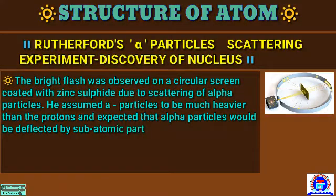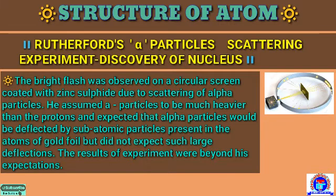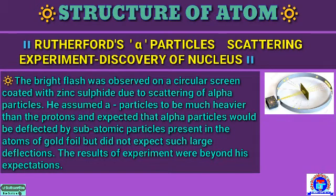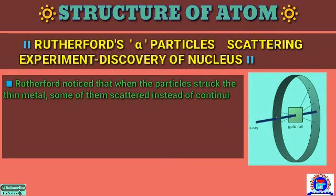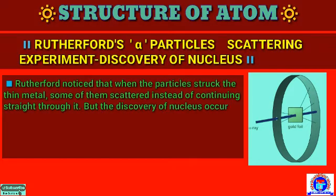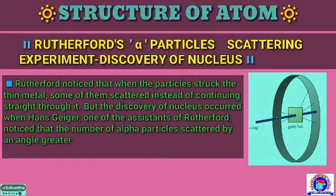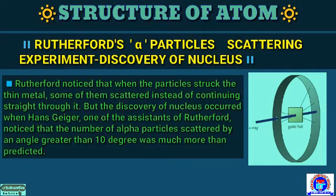Rutherford assumed alpha particles to be much heavier than the protons and expected that alpha particles would be deflected by subatomic particles present in the atoms of the gold foil, but did not expect such large deflection. The results of the experiment were beyond his expectation. Rutherford noticed that when the particles struck the thin metal, some of them scattered instead of continuing straight through it. The discovery of the nucleus occurred when Hans Geiger, one of the assistants of Rutherford, noticed that the number of alpha particles scattered by an angle greater than 10 degrees was much more than predicted.